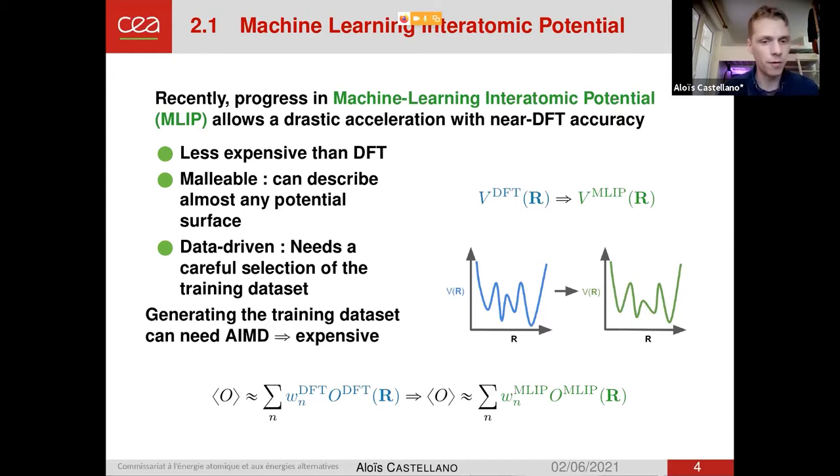Usually, or very often at least, a way to generate the training data set is to use ab initio molecular dynamics, which, as I said before, is expensive, even though some methods have emerged to reduce this cost. But I want to talk about something that we do in the end when we are doing a study with machine learning potential. So we start, we want to study a DFT system with this potential surface, and we fit a machine learning potential. But in the end, when we do some study, we are not studying anymore the DFT system, but we are studying the machine learning system. So when we compute averages, in the end, we are computing averages with quantity coming from the machine learning potential.